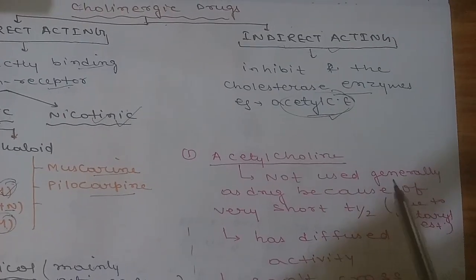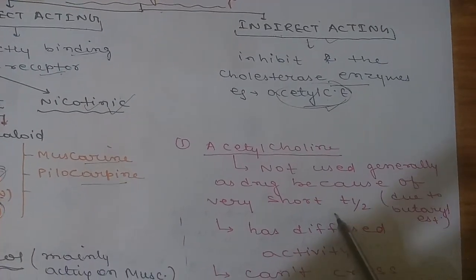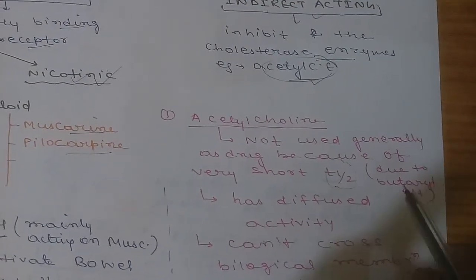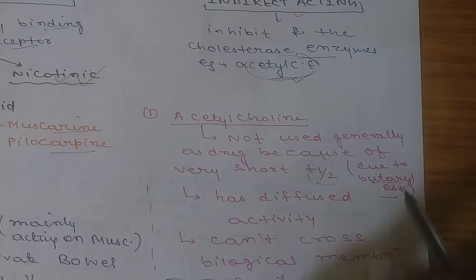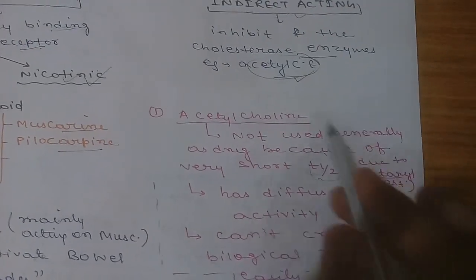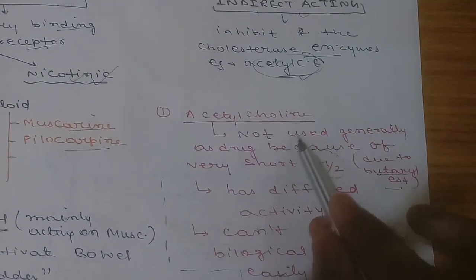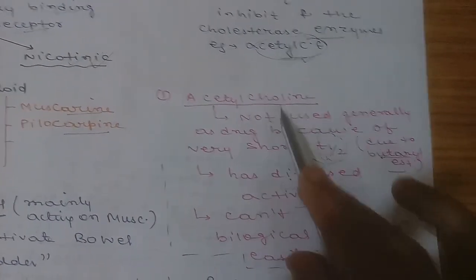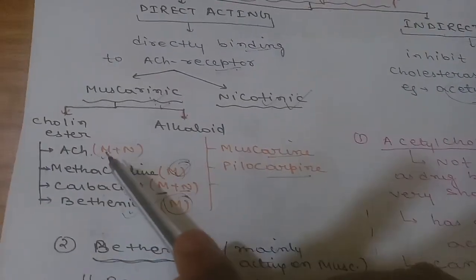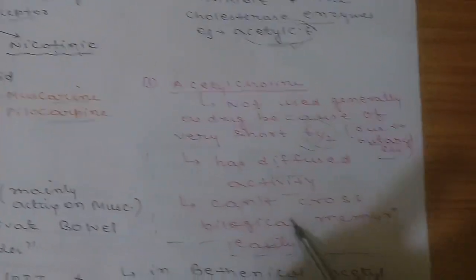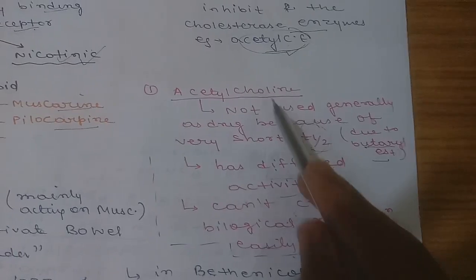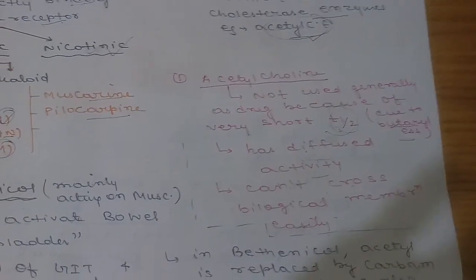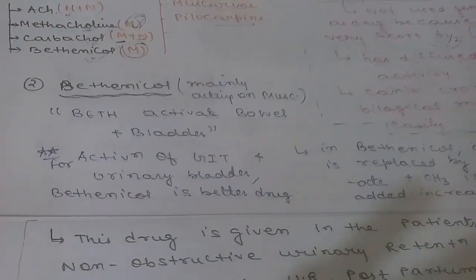Acetylcholine is not generally used as a drug because of its very short half-life. This is due to the presence of cholinesterase enzyme present in blood, which can destroy acetylcholine. It also has diffuse activity since it stimulates both muscarinic and nicotinic receptors. Additionally, it cannot cross biological membranes easily because it is charged. These three reasons explain why we do not use acetylcholine as a drug.